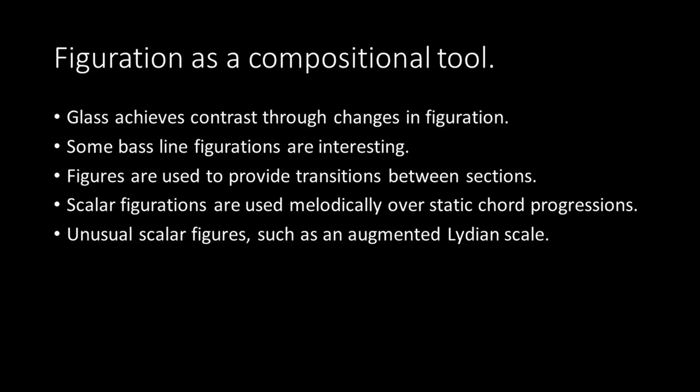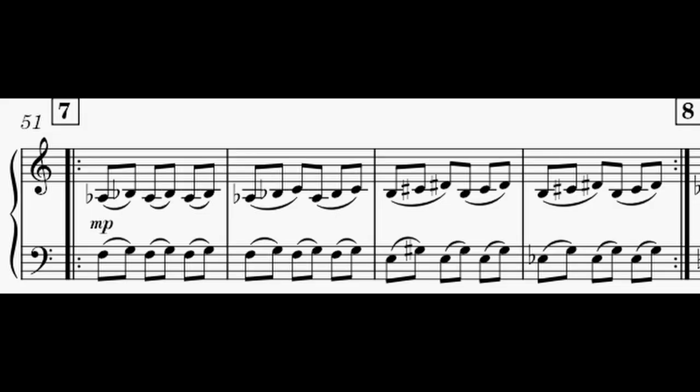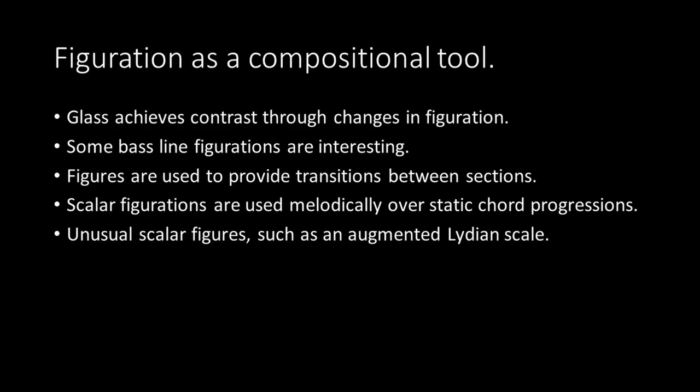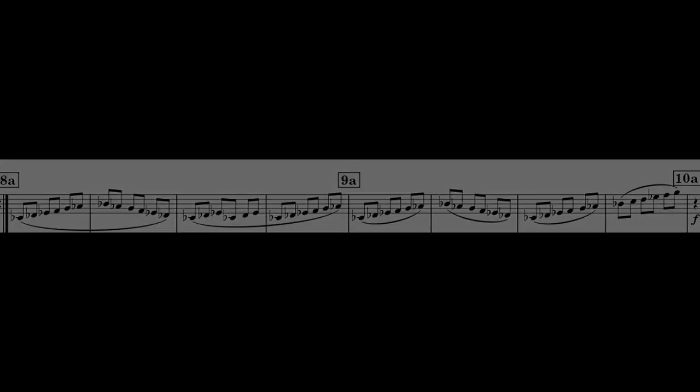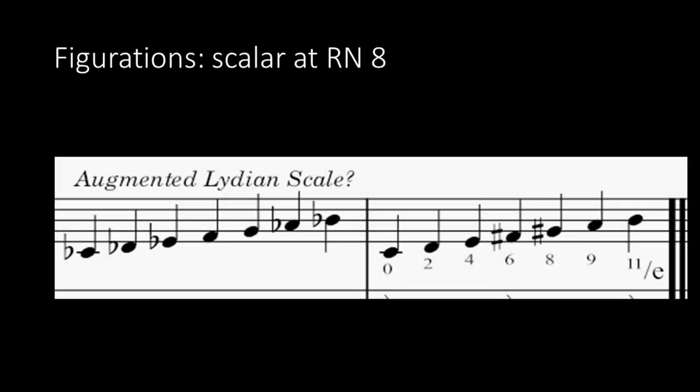Let's talk about figurations. Glass uses scalar figurations as transitions, and to a limited degree as sections in and of themselves. Let's listen to one of these transition scalar figures. Now let's have a listen to the fully drawn-out scales. Glass's use of enharmonic flats here doesn't make the task of determining what scale he is using easy, so I transposed this scale beginning on C4 and ordered it according to standard numerical form, so you can see the actual normal order of the scale. It looks kind of like an augmented Lydian scale to me.